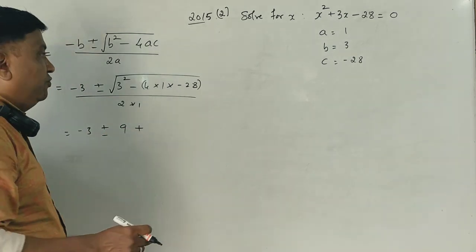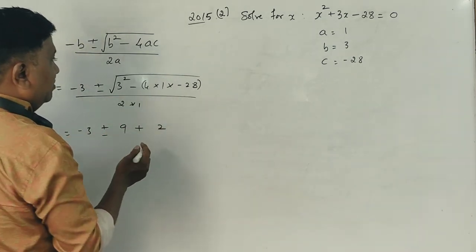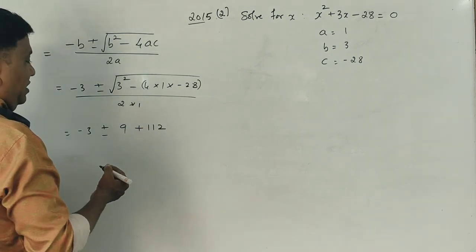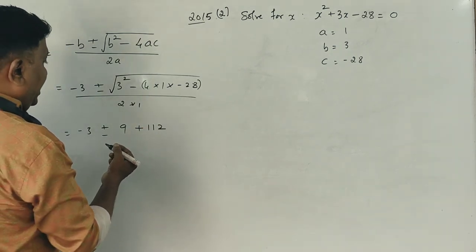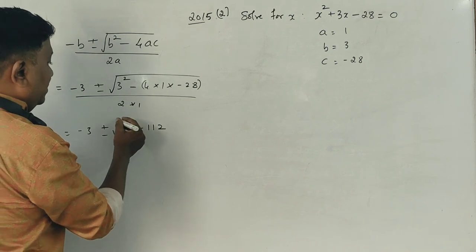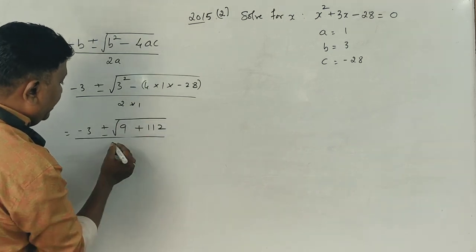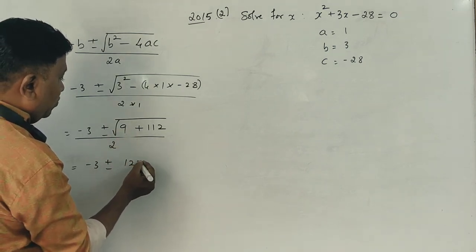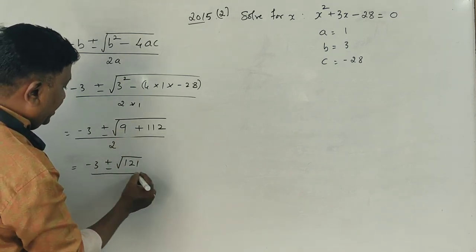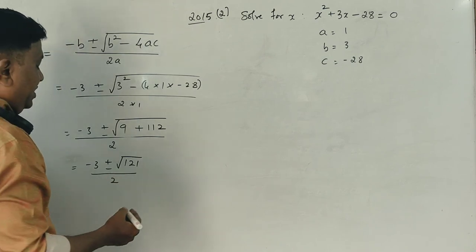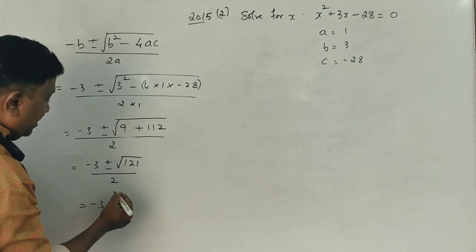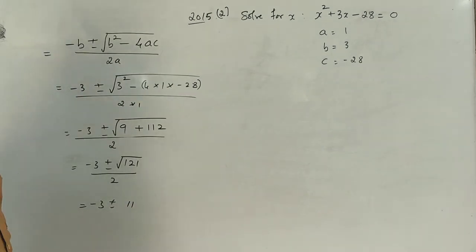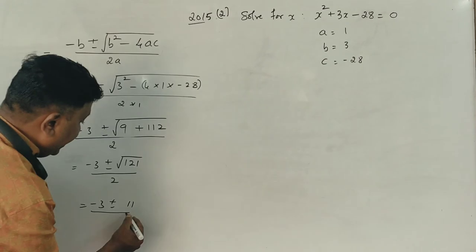So simplifying under the radical: 3 squared is 9, minus into minus is plus, 4 into 1 into 28 is 112. So 9 plus 112 is 121. Divided by 2. Correct? The square root of 121 is equal to 11. Divide by 2.